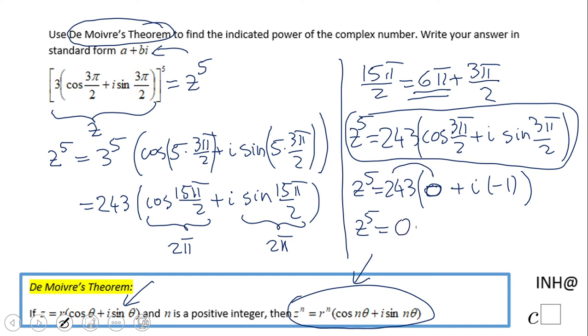That will be -243i. So z to the fifth power has a very simple form here: -243i. Okay, that's it! If you enjoyed this video, don't forget to click the like button and come back on C squared for more help. Thank you!